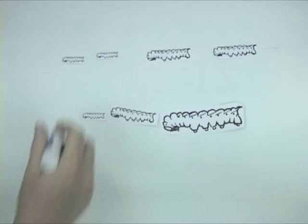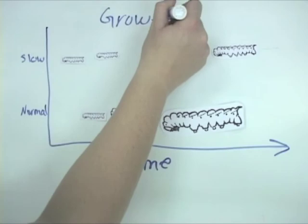Sometimes, direct and indirect defenses work together. For example, if a larva is growing slowly, there would be more opportunity for natural enemies to attack it.